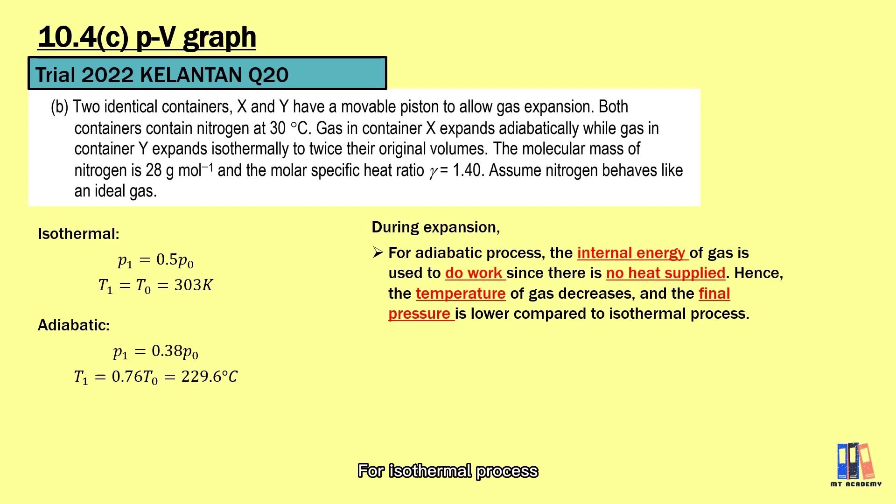For isothermal process, the work is purely done by using the heat energy from surrounding. The temperature of gas is constant, which means the internal energy of gas is also constant. As the volume expands, so the final pressure is decreasing, but not as much as in the adiabatic process. So this is one of the examples you could try to explain any of the thermodynamic process.